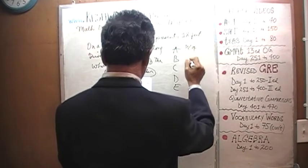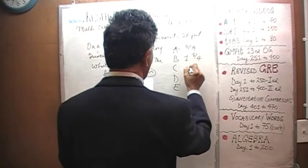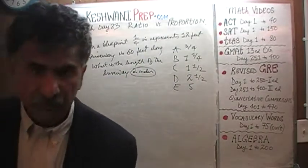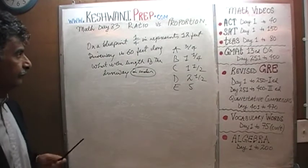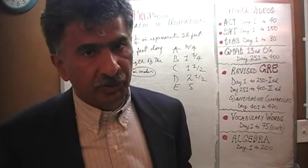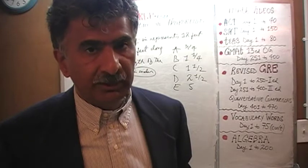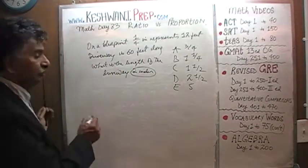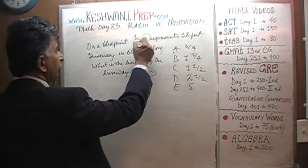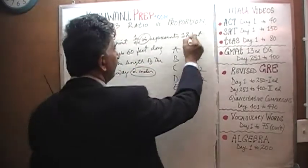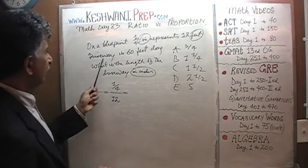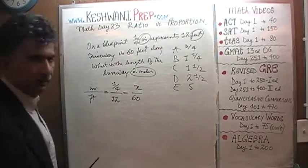Here are the answer choices: three quarters, one and one quarter, one and a half, two and a half, and five. I'll give you five seconds to pause and do it yourself. Okay, here we go. There are two ways to approach this. One way is to set it up in a very classical, academic way and actually work it out. What two things are we dealing with? One quarter of an inch represents 12 feet, and the driveway is 60 feet.